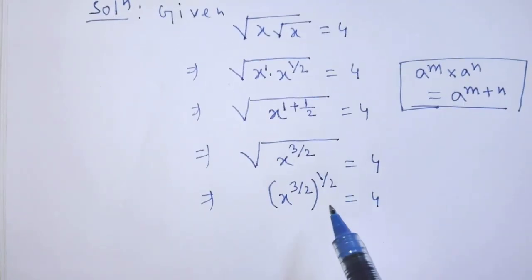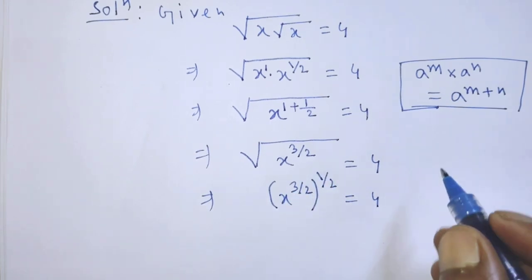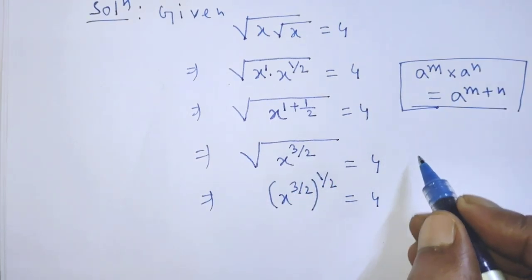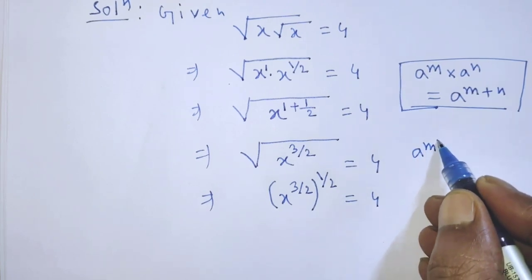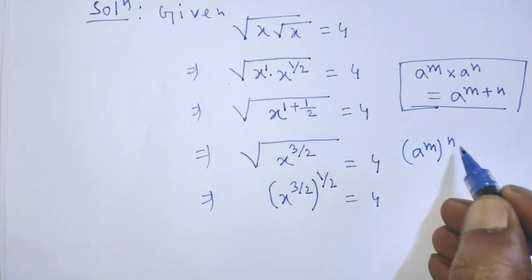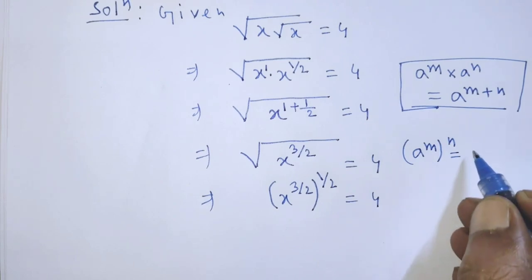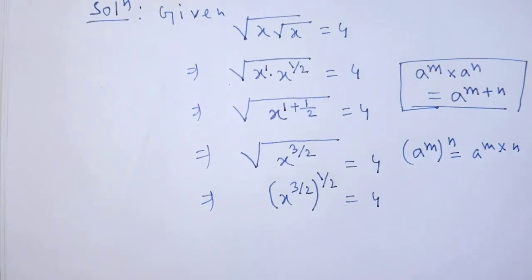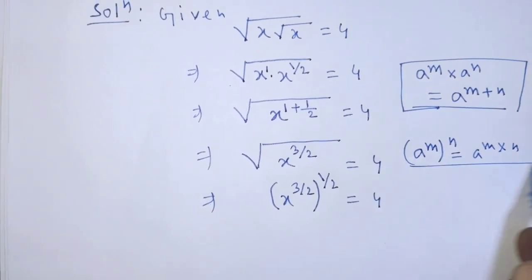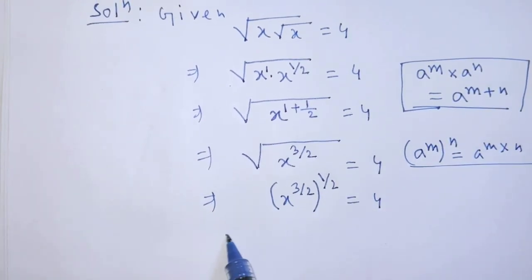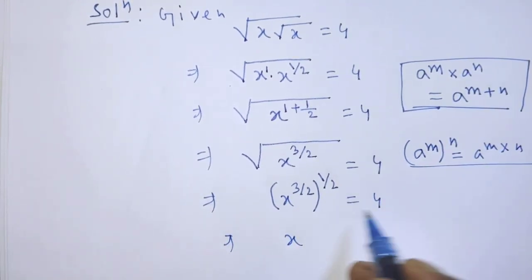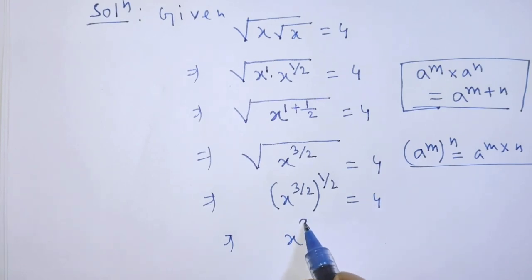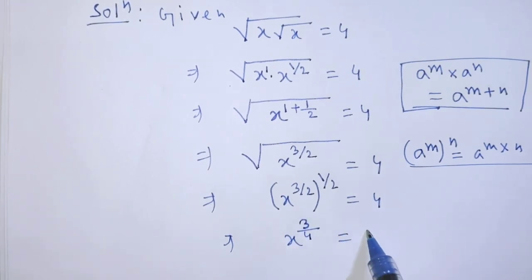To simplify this exponential form, we have to apply the formula: a to the power m, whole to the power n, is equal to a to the power m times n. According to this formula, it will be x to the power 3 over 4, is equal to 4.